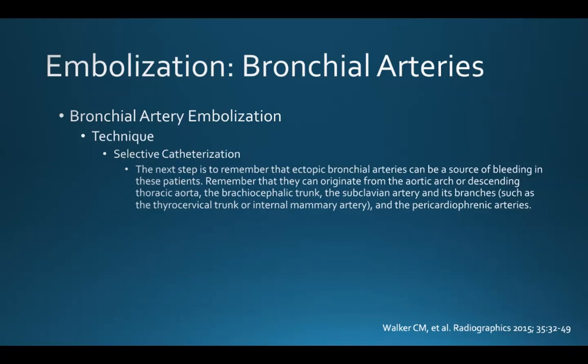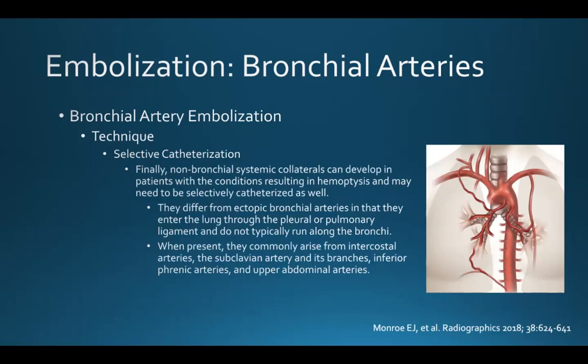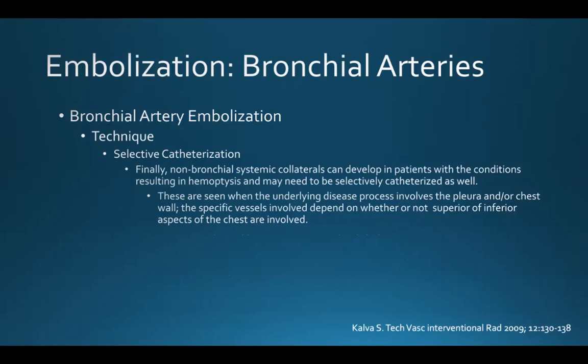The next step is to remember that ectopic bronchial arteries can be a source of bleeding in these patients. They can originate from the aortic arch or descending thoracic aorta, the brachiocephalic trunk, the subclavian artery and its branches such as the thyrocervical trunk or internal mammary artery, and the pericardiophrenic arteries. Non-bronchial systemic collaterals can also develop in patients with conditions that result in hemoptysis and may need to be selectively catheterized. They differ from ectopic bronchial arteries in that they enter the lung through the pleural or pulmonary ligament and don't typically run along the bronchi. When present, they commonly arise from intercostal arteries, the subclavian artery and its branches, the inferior phrenic arteries, and upper abdominal arteries.